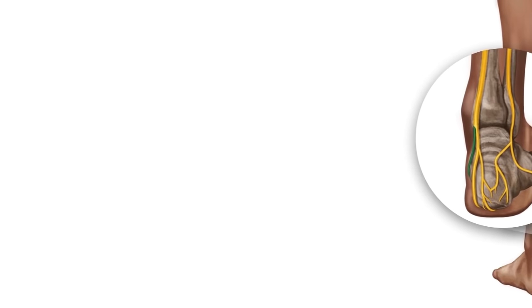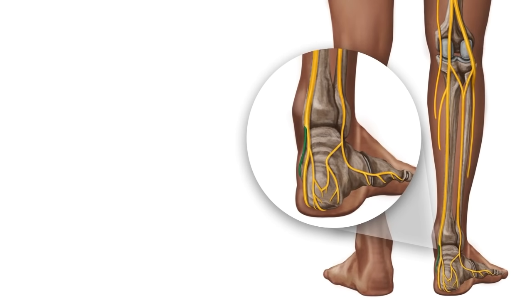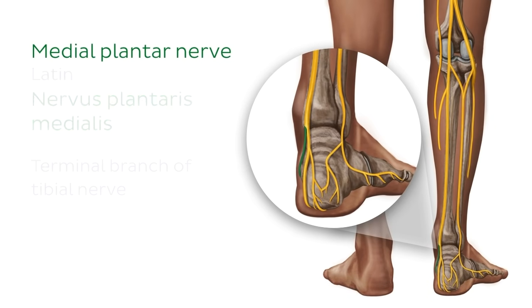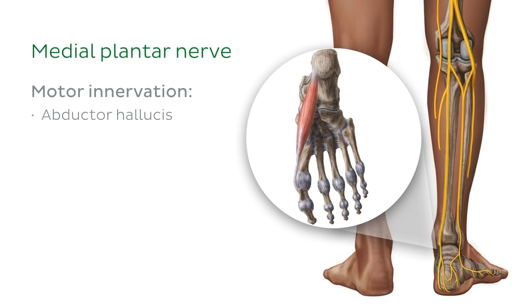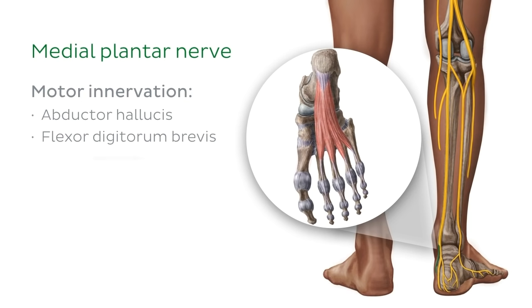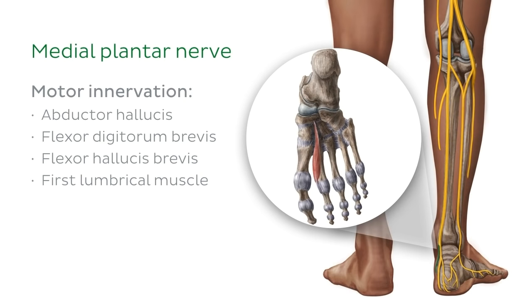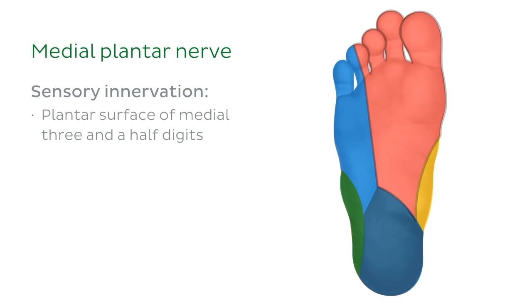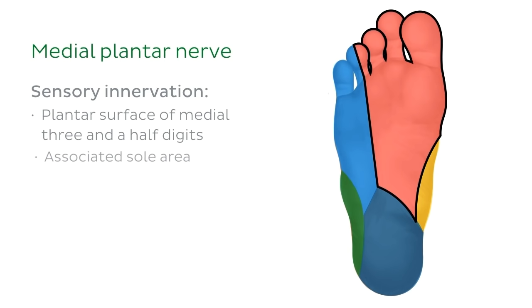Now back to the tibial nerve and its branches. Here we can see the medial plantar nerve highlighted in green, which is a terminal branch of the tibial nerve. This nerve provides motor innervation to the abductor hallucis muscle, flexor digitorum brevis, flexor hallucis brevis, and the first lumbrical muscle of the foot. The medial plantar nerve also provides sensory innervation to the plantar surface of the medial three and a half digits and the associated sole area.